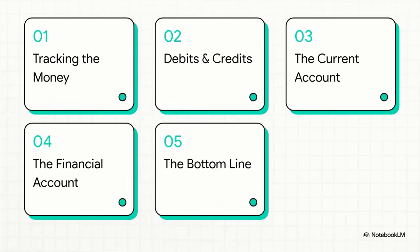Here's how we're going to tackle this. First, we'll get the official name for this money-tracking tool. Then, we'll go over the basic rules of the game — debits and credits. After that, we'll dive into the two main buckets where everything gets sorted: the current and financial accounts. And finally, we'll add it all up to get the bottom line.